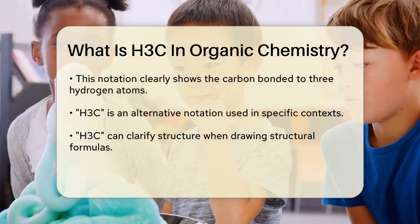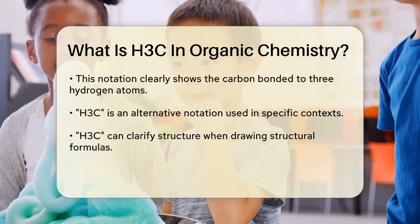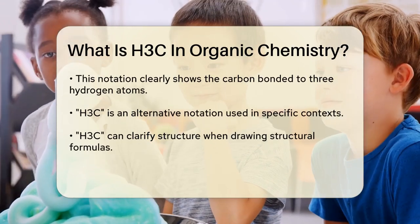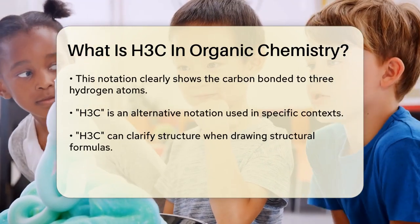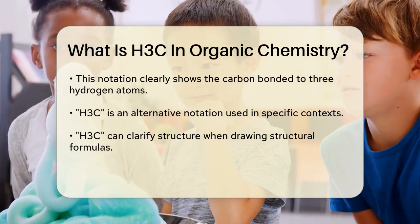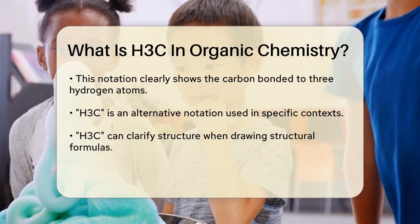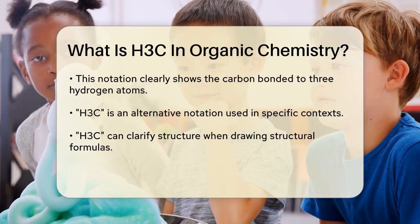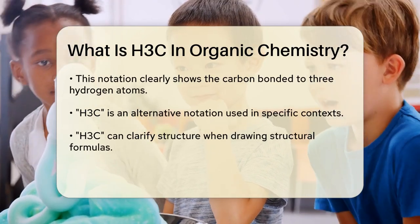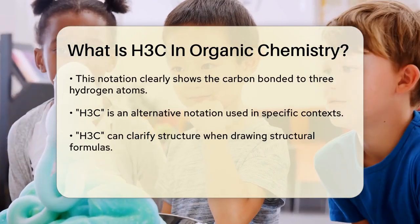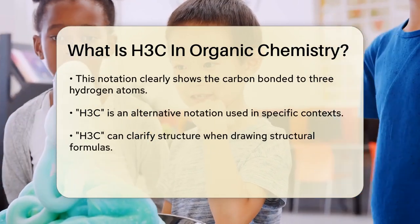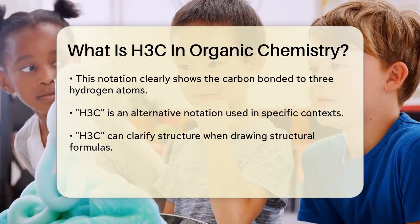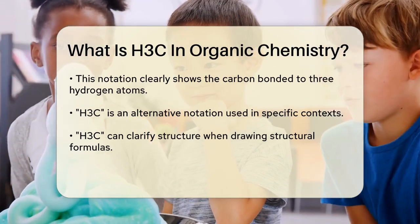The difference in notation comes down to how the molecule is being represented. When you see CH3, it's a more common way to write the methyl group, emphasizing the carbon atom at the center. This notation is clear and straightforward, showing that the carbon is bonded to three hydrogen atoms.